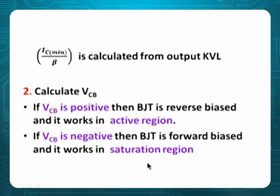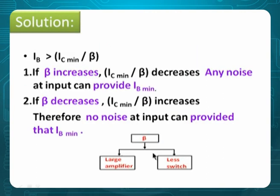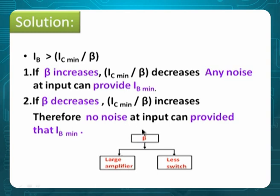Problem 8: How to decide the value of beta? If beta is large, IC(min)/beta becomes very small, and noise can easily provide such a small IB — not good for switching. If beta is small, IC(min)/beta increases, and no noise can produce such an IB. Therefore, beta is large for amplifiers and small for switches. That's why beta = 19 was used in the switching problem. For amplifiers, beta can be 100, 200, or more.